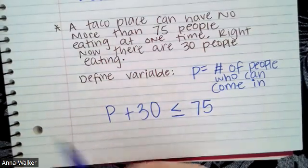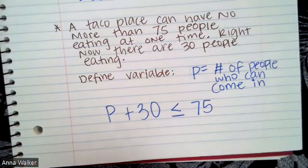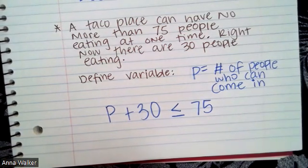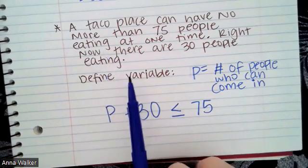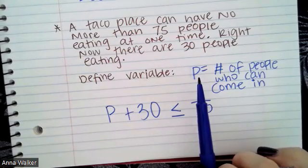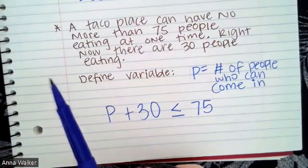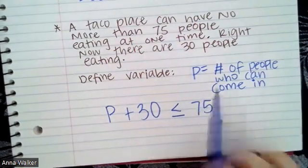When you're writing inequalities, some key terms to keep in mind are: 'more than,' 'at least,' 'no more,' and 'at most.' All of those are really important when writing inequalities because they help you figure out what symbol you need. Also, if there is no variable defined, you need to define the variable. I like to pick variables that relate to the problem — I picked P for people and H for hours. It really depends on what piece of information you are looking for.